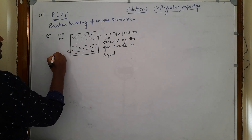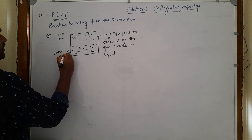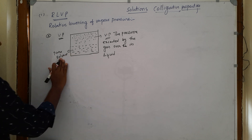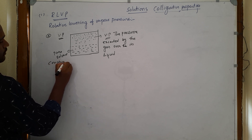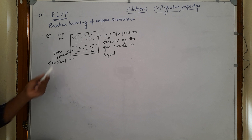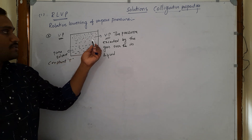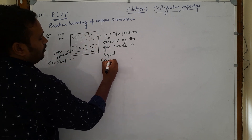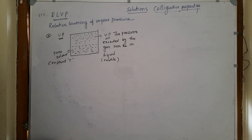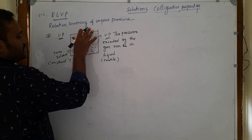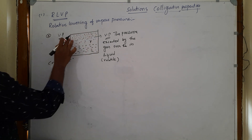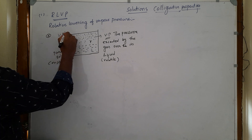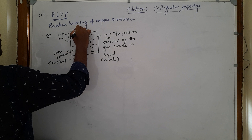Here we take only pure solvent at a constant temperature. When you see a pure liquid solvent at a constant temperature, you can observe some pressure over the liquid. Because it is a volatile liquid, it converts into gaseous state and exerts some pressure at a constant temperature. This particular pressure is measured using a manometer.